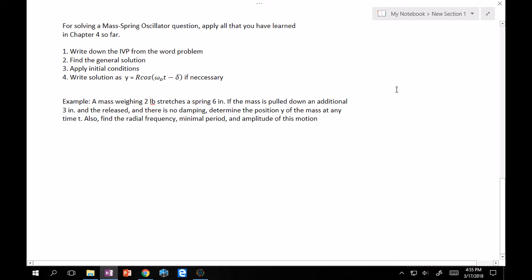Alright. So then we have solving the mass oscillator question. Great. So we described it qualitatively before. We discovered how to find the IVP. Now we're going to get down to solving it. And so really, since this is all build up, we just need to use what we've learned so far. So all you have to do is follow these four steps. Write down the IVP from the word problem. Find the general solution, which will be from the last video. Apply initial conditions, and then if the problem asks you to, write it as R cos(ω₀t - δ).